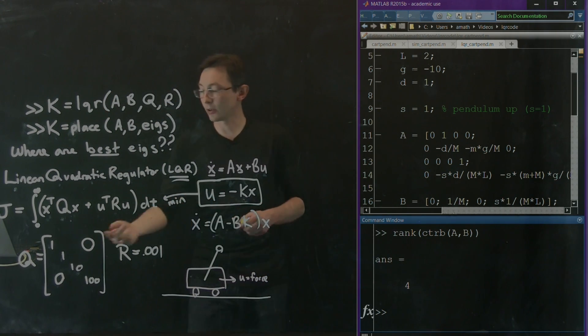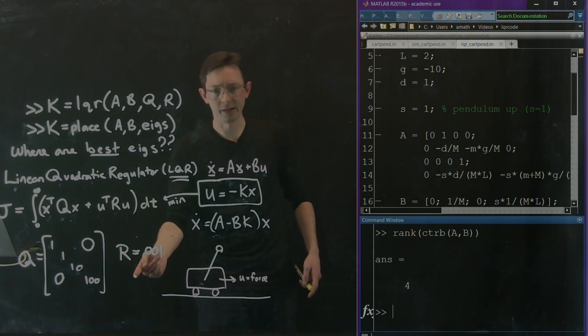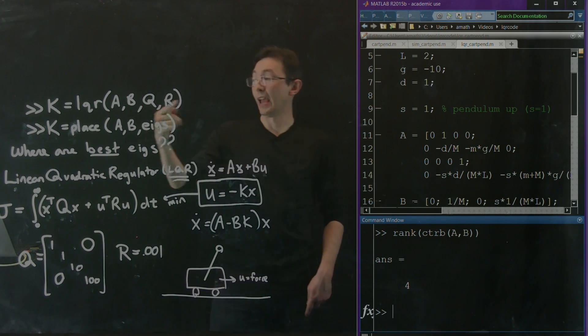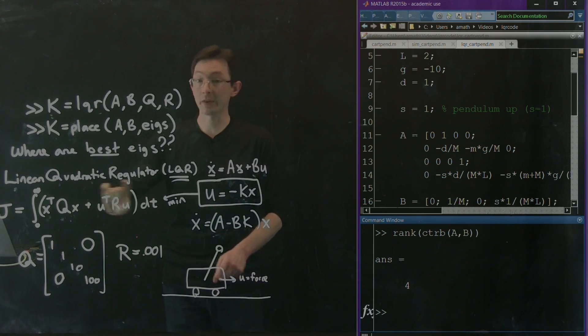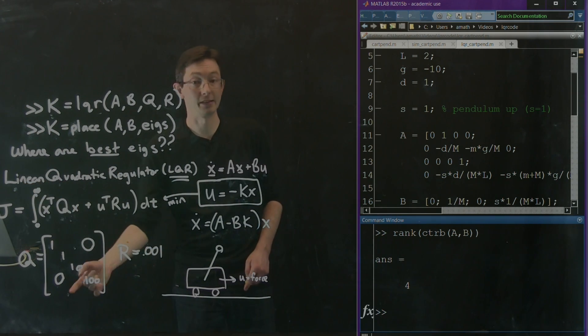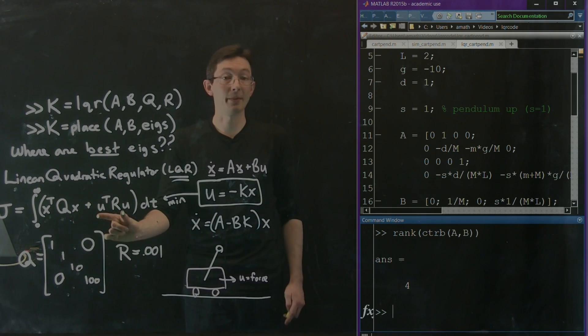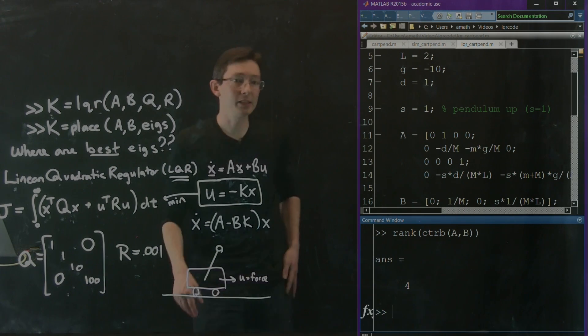So I need to cook up a Q matrix and an R matrix. I think mine are actually pretty similar to this. I need an A matrix and a B matrix for the linearization. And LQR will give me the optimal controller for that cost function with these cost weights of how much I weight the state deviations and how much I weigh the control expenditure.